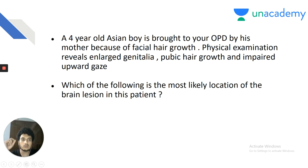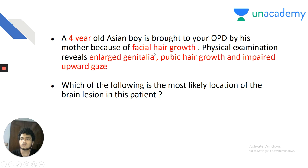Clinical scenario 2: A 4-year-old Asian boy is brought to OPD because of facial hair growth. Physical examination reveals enlarged genitalia, pubic hair growth, and impaired upward gaze. Which is the most likely location of the brain lesion? A 4-year-old with facial hair growth immediately suggests precocious puberty. Enlarged genitalia, pubic hair and impaired upward gaze — precocious puberty associated with impaired upward gaze or visual disturbances.